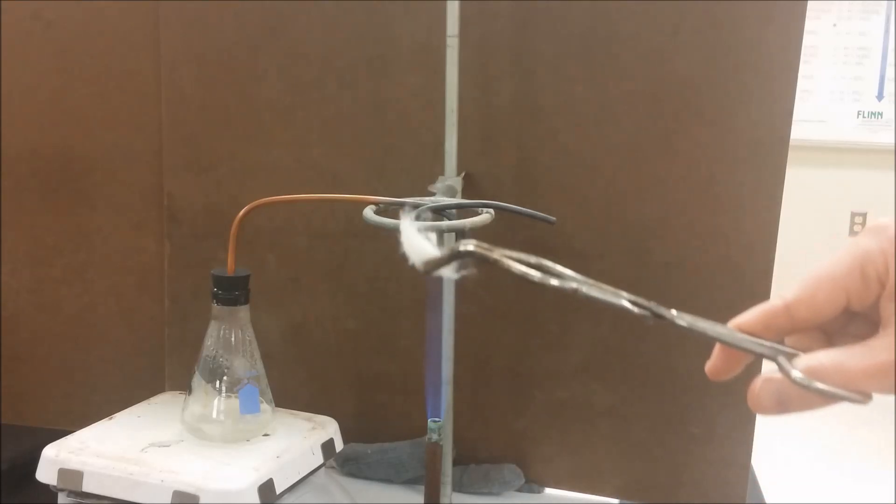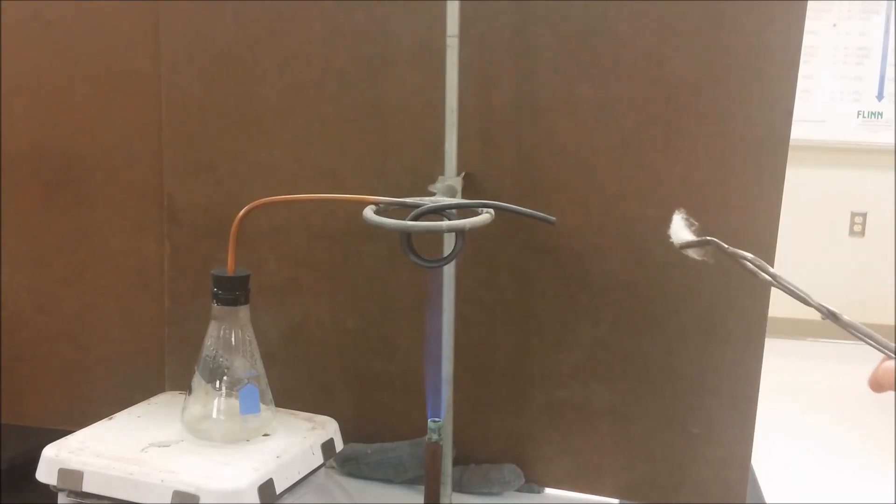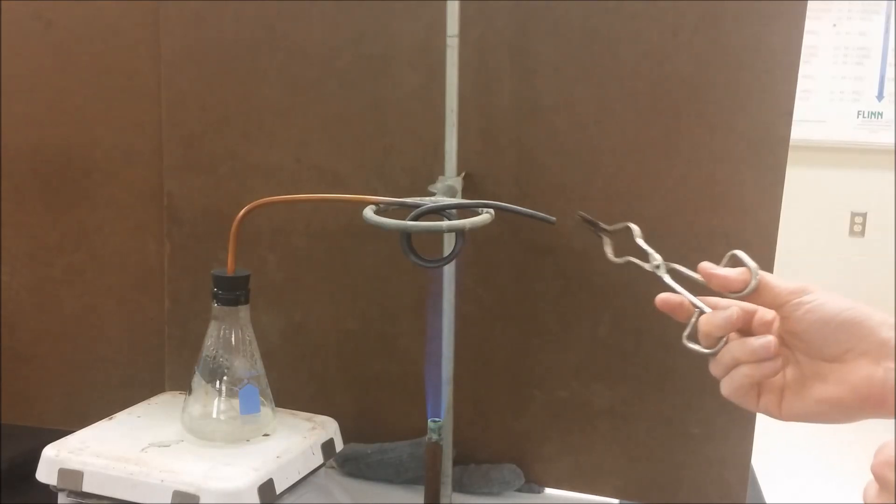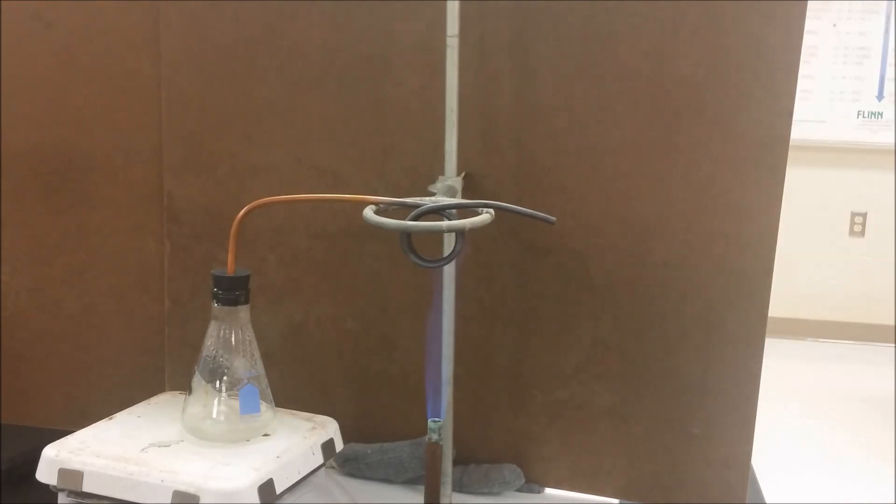Then we also have some flash cotton that has oxygen embedded within it. We hold it in front of the steam and very quickly it goes up in flame.